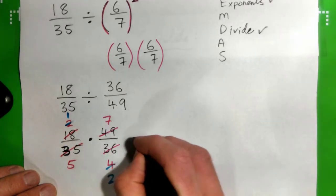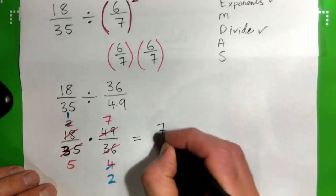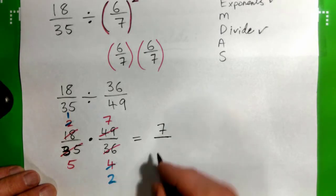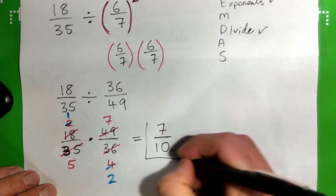So on the top we get one times seven, seven. On the bottom, five times two, ten. Seven tenths.